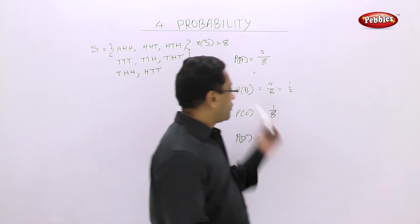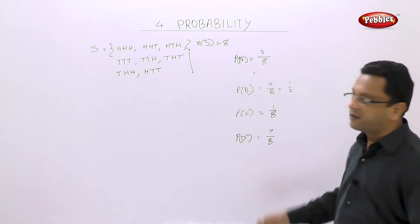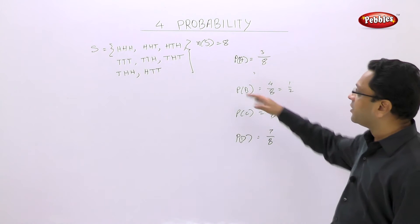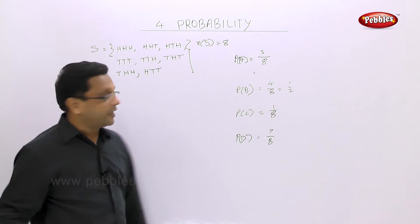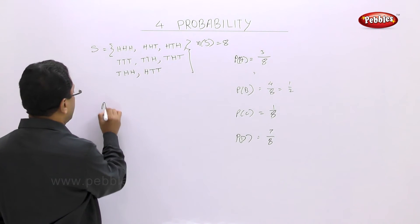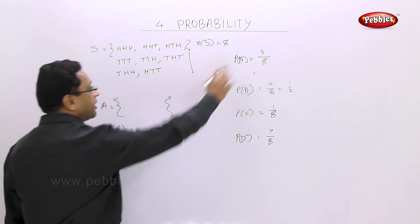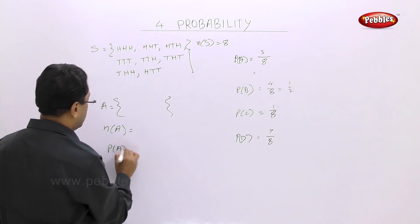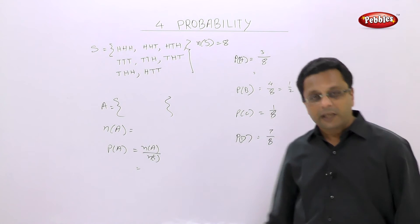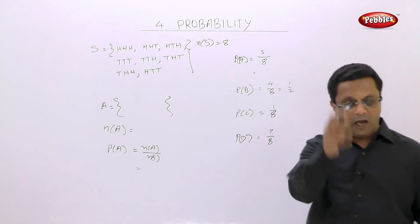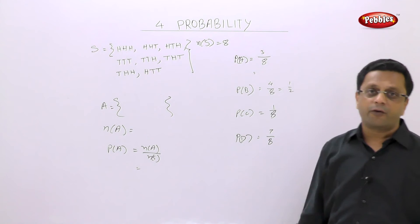We have found out the probability. But remember one thing: whenever an event is given, you should not write down the answer directly. You have to first write what event A is — write the event set. Then find out n(A). Then write down the formula P(A) = n(A)/n(S), and then solve it. I have just skipped these steps, but you have to write them. These steps are a must; otherwise you will not get marks.